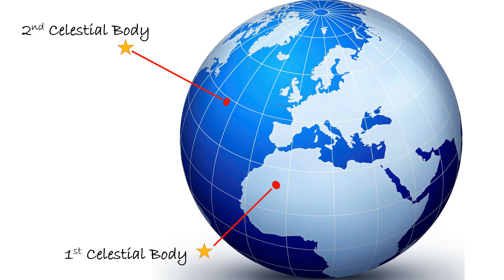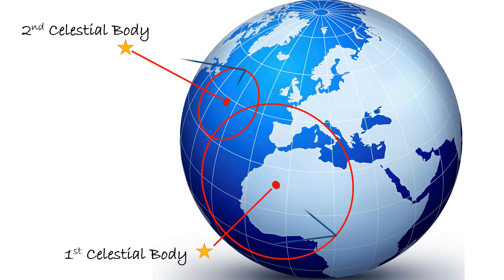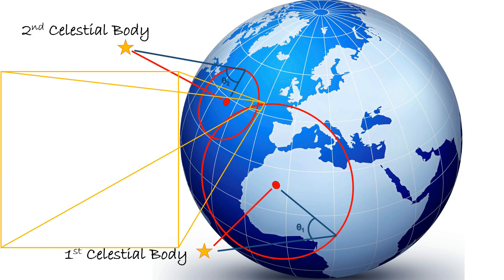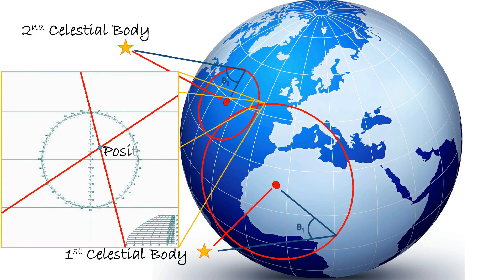Called the intercept method, navigators can obtain both their latitude and longitude simultaneously by obtaining two or more lines of position. These lines of position are obtained from a sight reduction of celestial bodies observed through a sextant. Once these lines of position are obtained, their intercept marks your position.